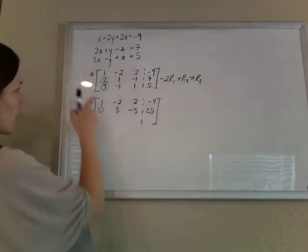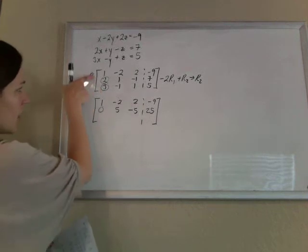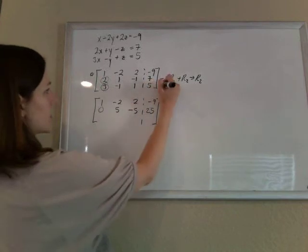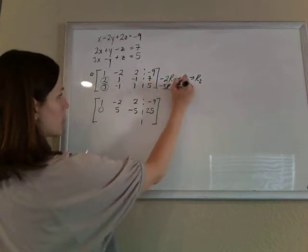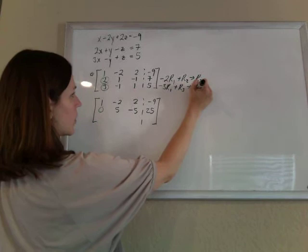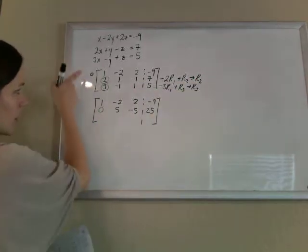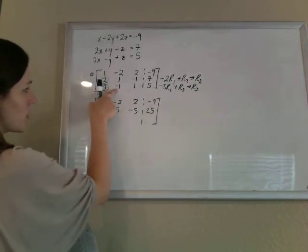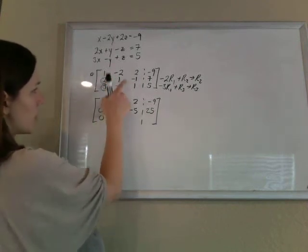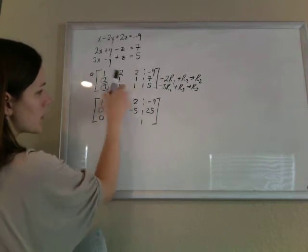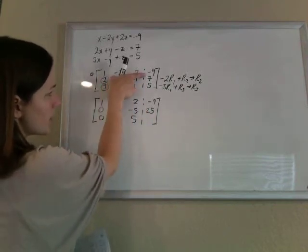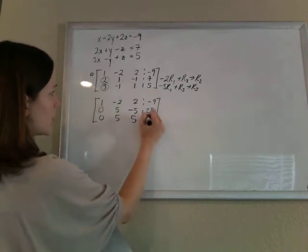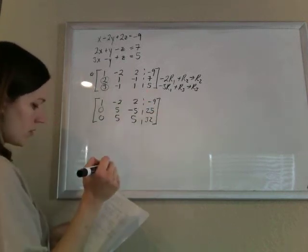Now for this guy. Negative 3 times row 1 plus row 3 will do it. So negative 3 times row 1 plus row 3 to make my new row 3. So negative 3 plus 3 is 0. 6 minus 1 is 5. Negative 6 plus 1 is 5. 27 plus 5 is 32. Excellent.